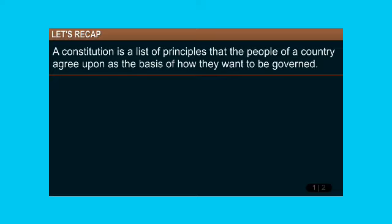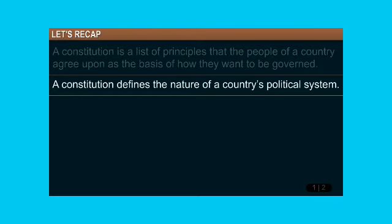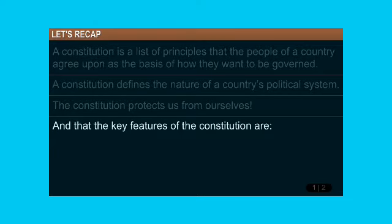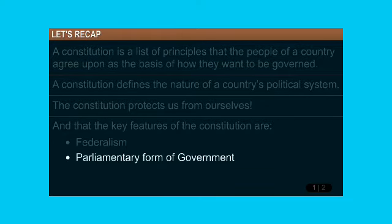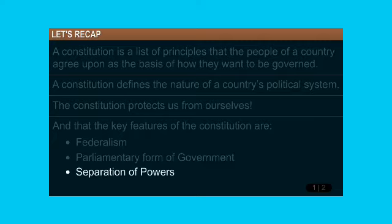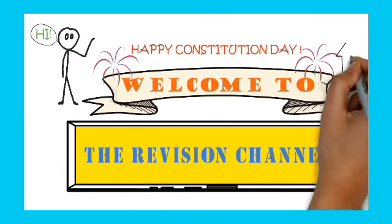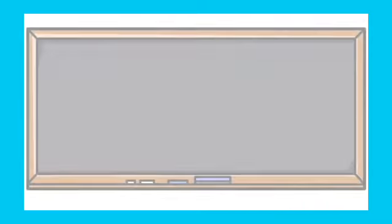A Constitution is a list of principles that the people of a country agree on, defining the base of how they want to be governed, and the nature of a country's political system. The Constitution protects us from ourselves. The key features of the Constitution are: federalism, parliamentary form of government, separation of powers, fundamental rights, directive principles, and secularism.